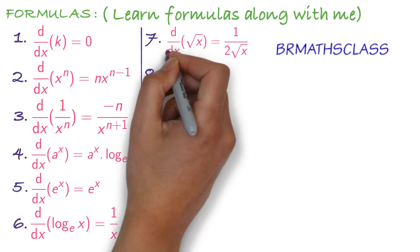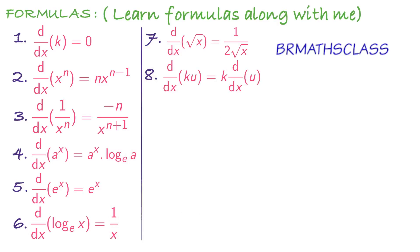Eighth formula — a very, very important formula. d by dx of k into u, where k is a constant and u is a function: d by dx of ku is k into the derivative of u. Very frequently used formula. For example, derivative of 2 into x square — we write it as 2 into derivative of x square. So d by dx of ku is k into du by dx.